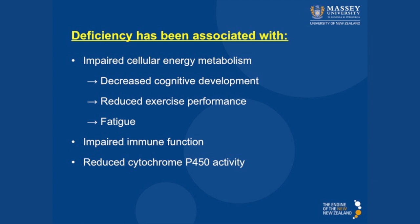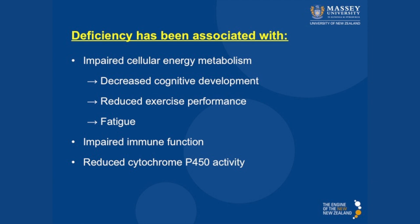If we have suboptimal iron status, oxygen distribution may be compromised, energy production may be compromised, and cells such as neurons may have reduced activity. So cognitive function and cognitive development can be depressed. Also fatigue can occur, especially in exercise performance — not only does anaemia cause a big decrease in exercise performance, but mild to moderate iron deficiency can as well, not because we're reducing the number of red blood cells, but because we reduce the amount of energy that the mitochondria can produce. Impaired immune function has been associated with iron deficiency, as well as reduced cytochrome P450 activity and reduced ability to detoxify potentially harmful substances.